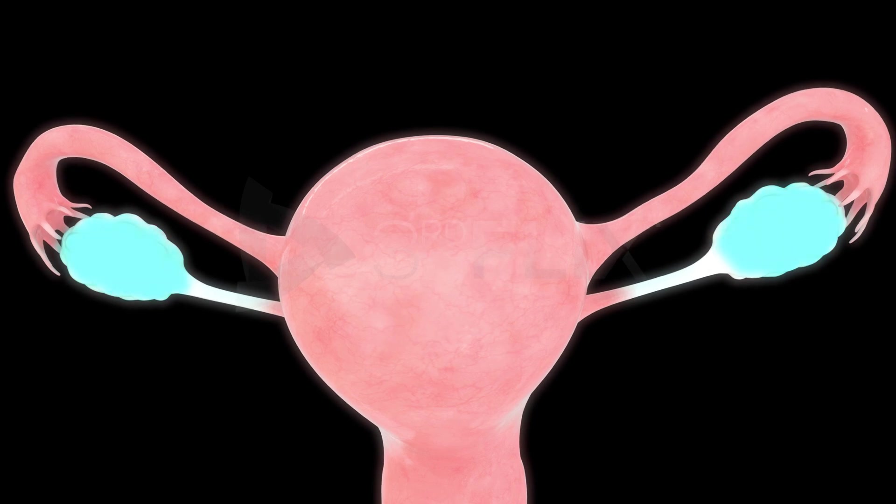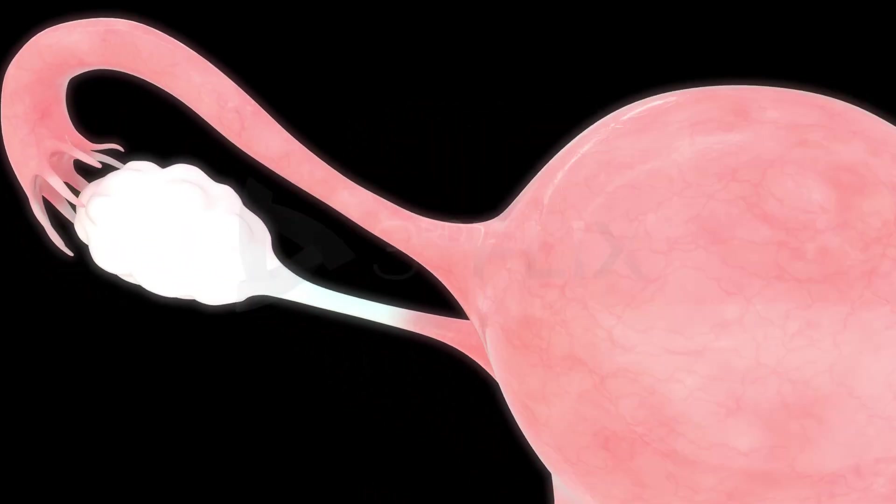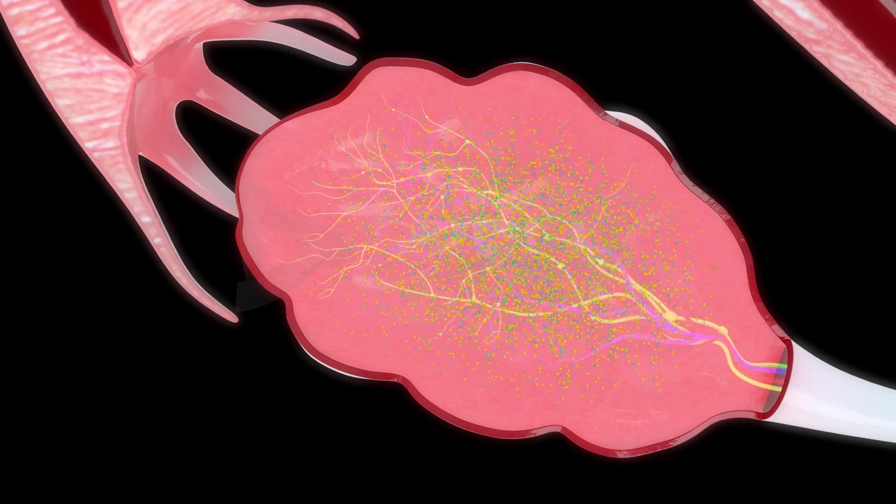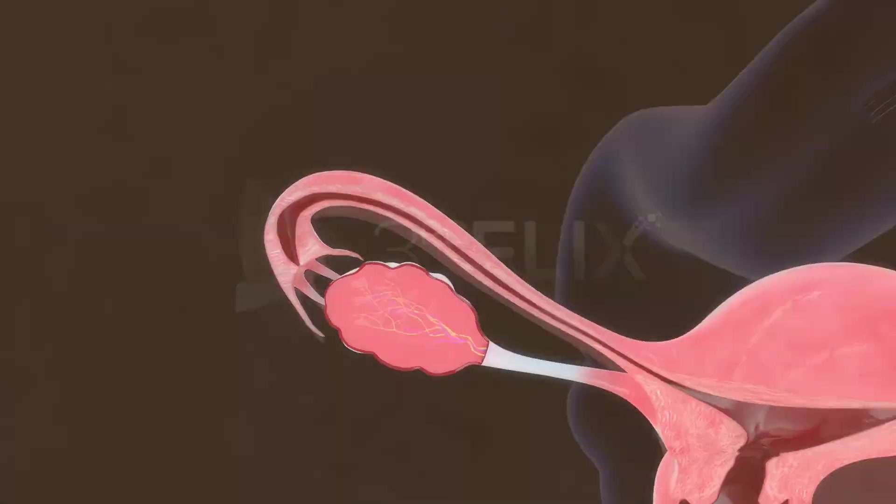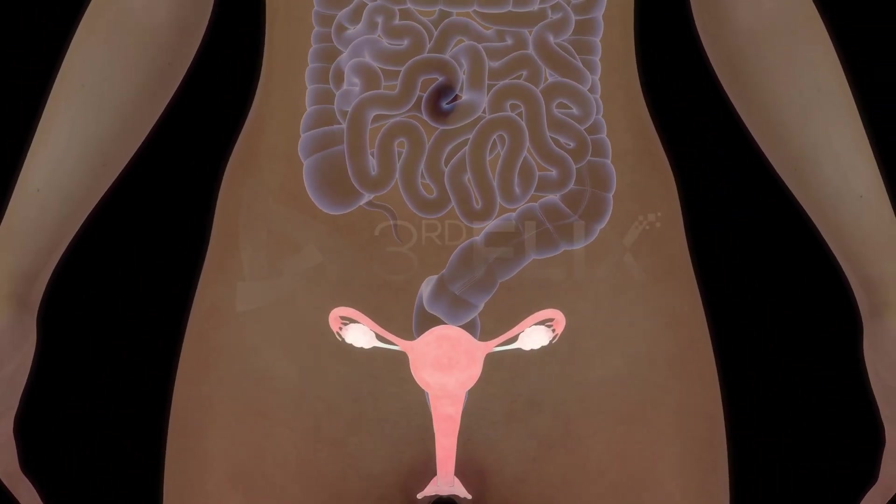Ovaries: The ovaries are the primary sex organs of females. They produce the female gametes called ova, and also produce the female sex hormones. The pair of ovaries lie one on each side in the lower part of the abdomen.